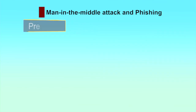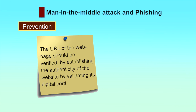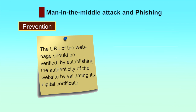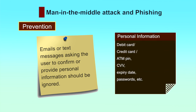For prevention against phishing attacks: the URL of the webpage should be verified by establishing the authenticity of the website by validating its digital certificate. To do so, go to File, Properties, Certificate or double-click on the padlock symbol at the upper right or bottom corner of the browser window. Emails or text messages asking the user to confirm or provide personal information such as debit card, credit card, ATM PIN, CVV, expiry date, passwords etc. should be ignored.